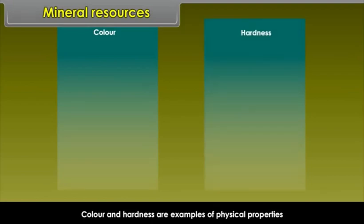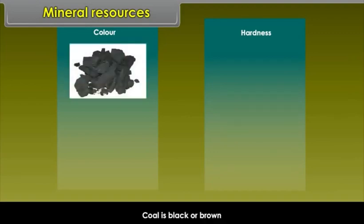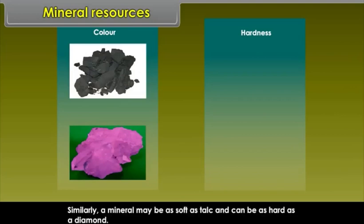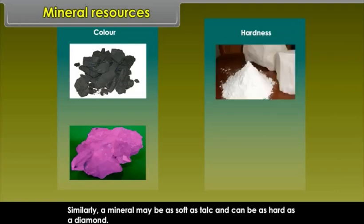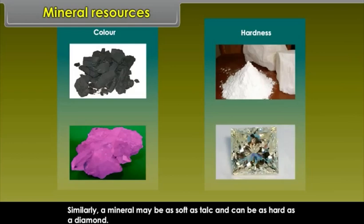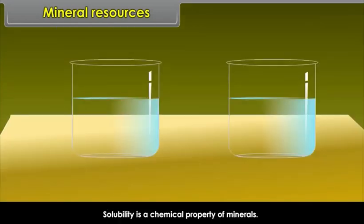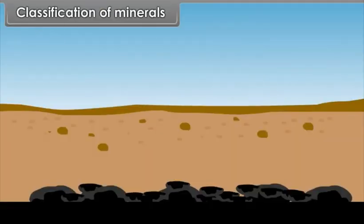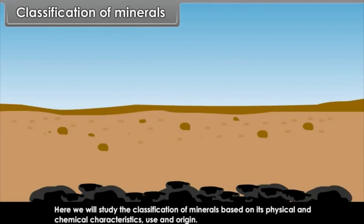Color and hardness are examples of physical properties — coal is black or brown; quartz may be red, black, pink or purple. A mineral may be as soft as talc and as hard as a diamond. Solubility is a chemical property of minerals; for example, salt is soluble while quartz is insoluble. Minerals can be classified based on physical and chemical characteristics, use and origin.